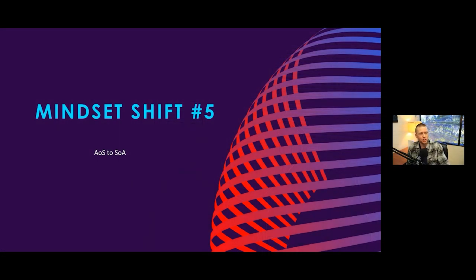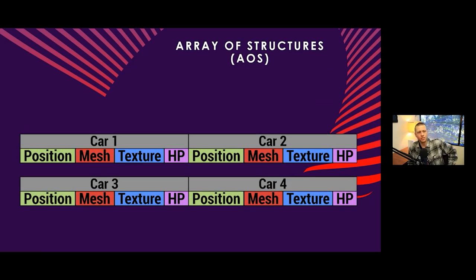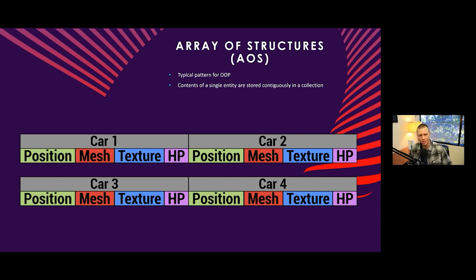The final mindset shift we're going over is AOS to SOA. AOS — Array of Structures — is a typical pattern for object-oriented programming where the contents of a single entity are stored contiguously in a collection. In this example, we have a collection of cars: car one, car two, car three, car four, each with a number of specific components associated with them. You can see that data is stored by entity rather than by component.